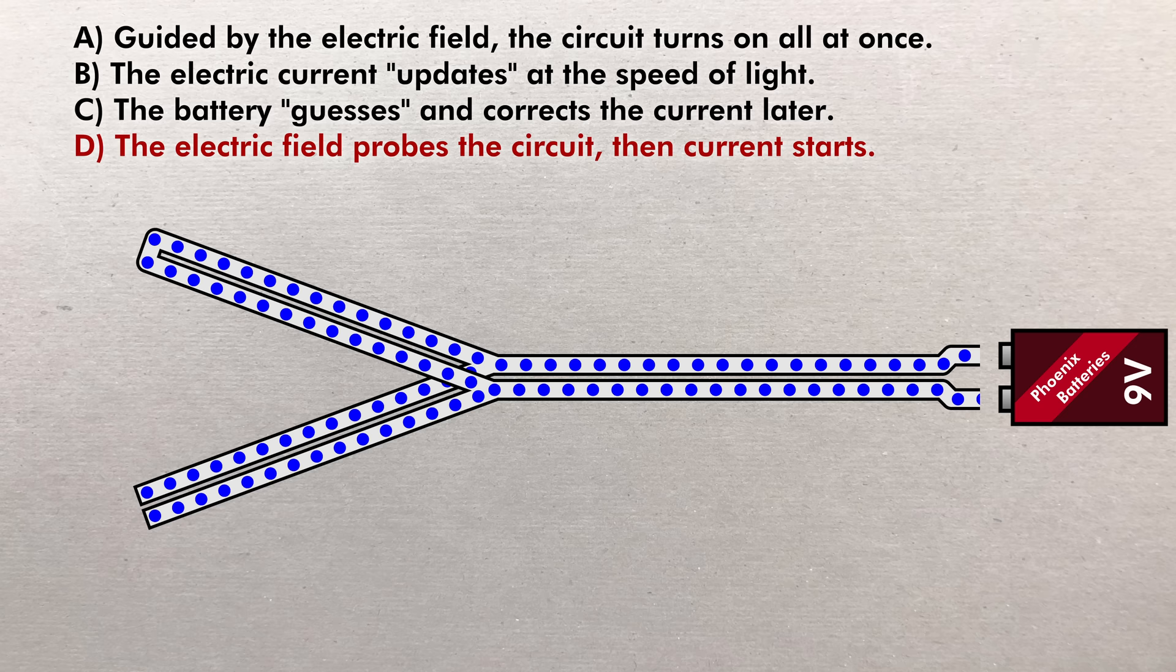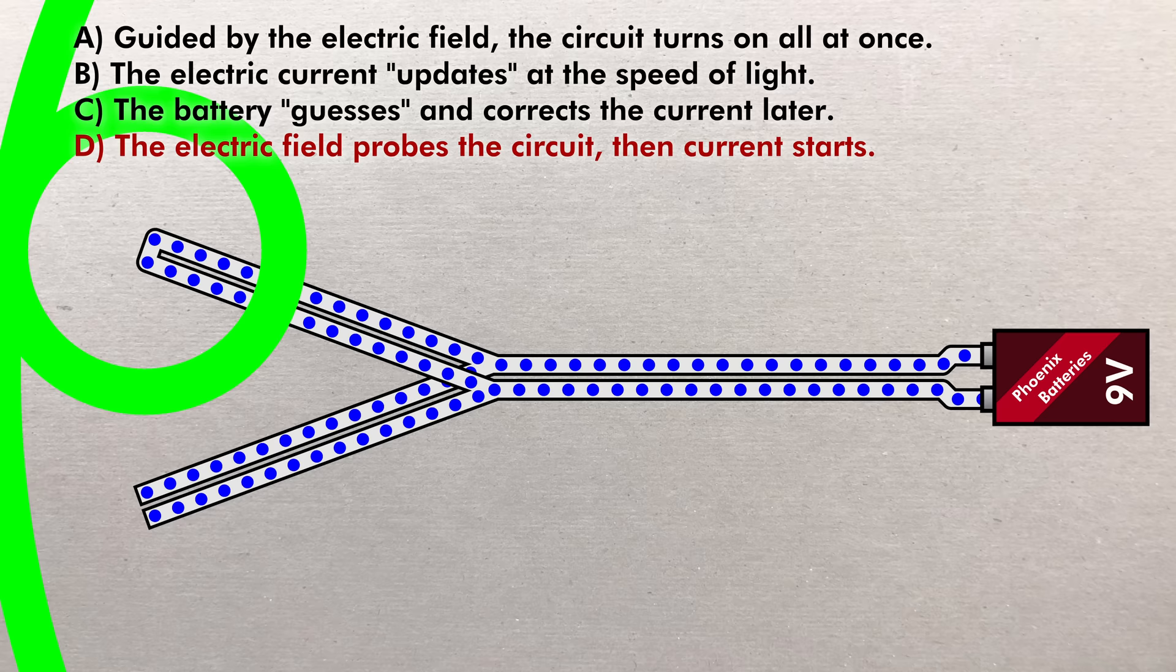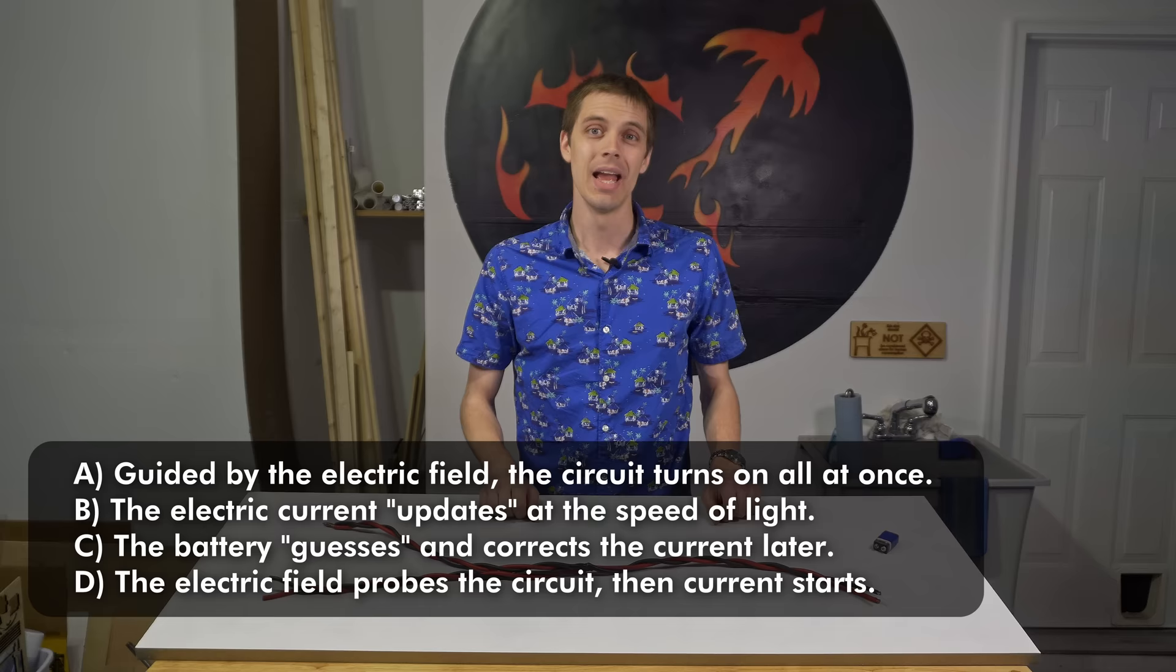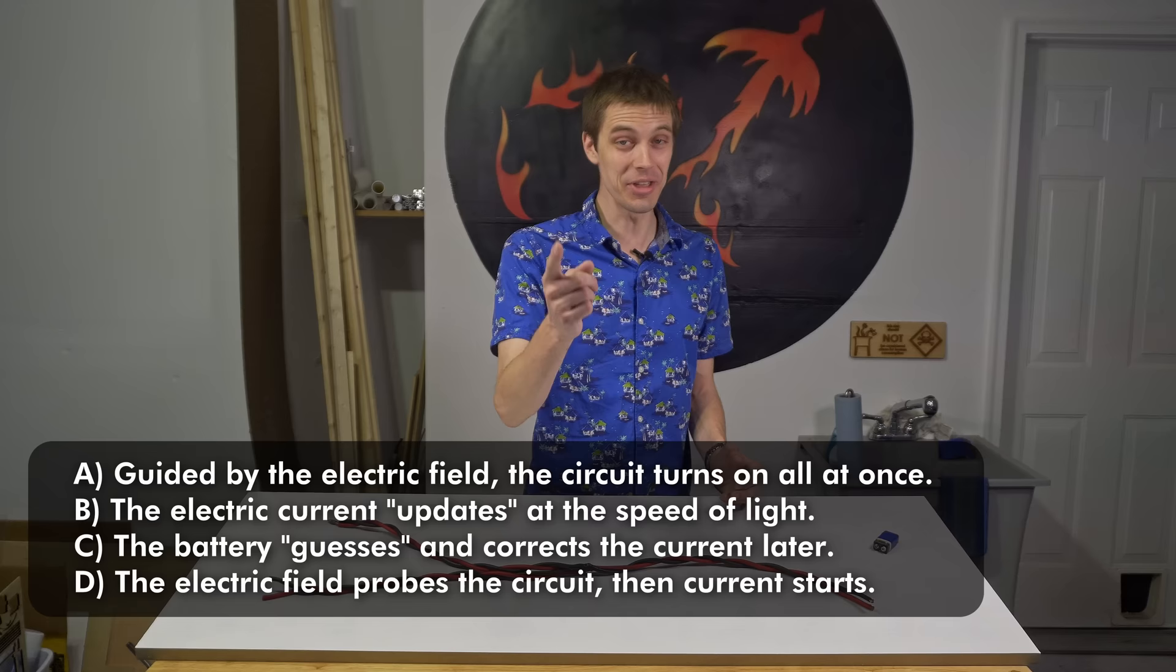Option D, initially nothing happens. The battery updates the electric field at the speed of light, and once information has returned from the other end of the circuit, the correct amount of current starts to flow in the connected leg all at once. In this video, we're actually going to be able to record a circuit like this fast enough to differentiate between these four options. So think about it for a minute, make your guess, and drop it in the comments while the title card plays.